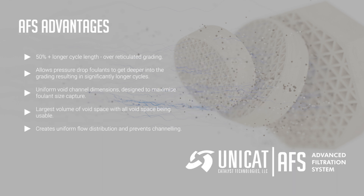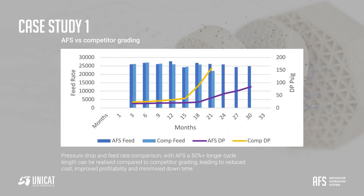AFS advantages: 50% longer cycle length over reticulated grading. Allows foulants to get deeper into the grading, resulting in significantly longer cycles. Uniform void channel dimensions designed to maximize foulant size capture. With AFS, a 50% longer cycle length can be realized compared to competitor grading.